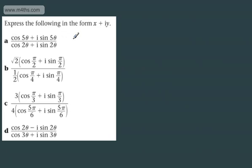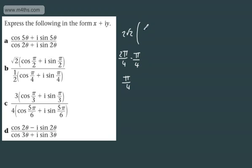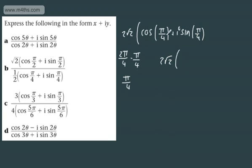Let's do some division. We're asked to express these in the form x plus iy. When we're dividing, we divide the moduli and subtract the argument. Root 2 divided by half is 2 root 2. Converting pi by 2 into 2 pi by 4 and subtracting pi by 4 gives pi by 4. So we end up with 2 root 2 times cosine of pi by 4 plus i sine of pi by 4. Cosine of pi by 4 is 1 over root 2 plus 1 over root 2i, giving us 2 plus 2i.